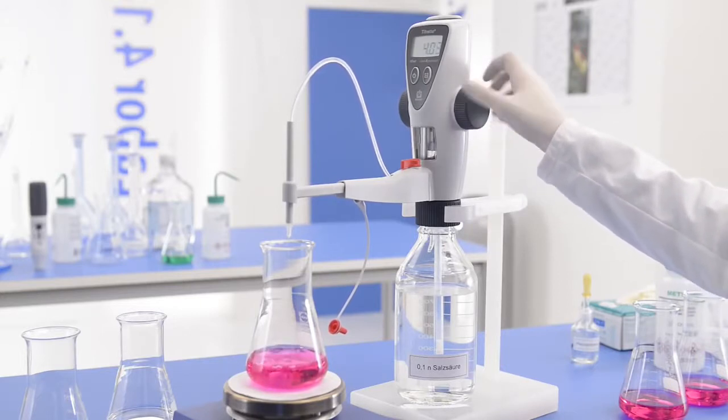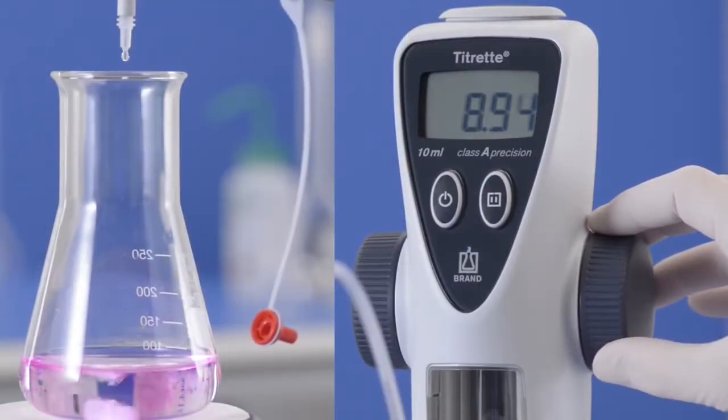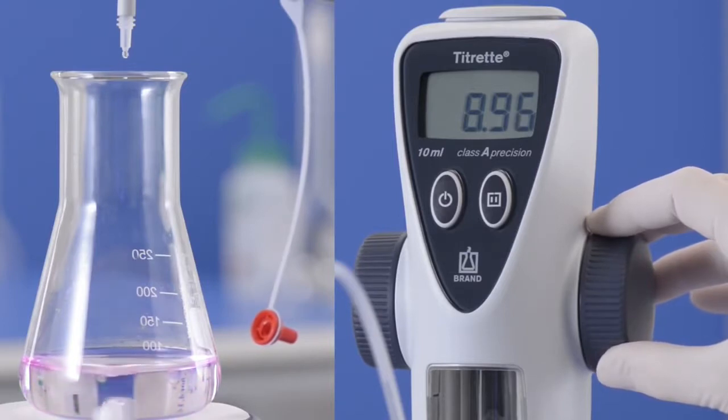If the approximate concentration is known, titration can proceed quickly until shortly before the end point. Then add the standard solution, drop by drop, until the color change.